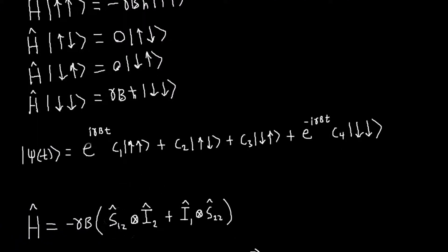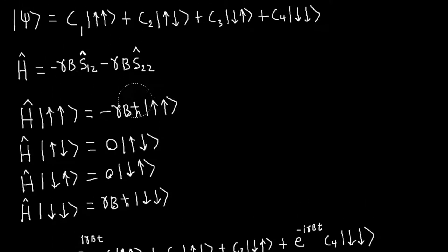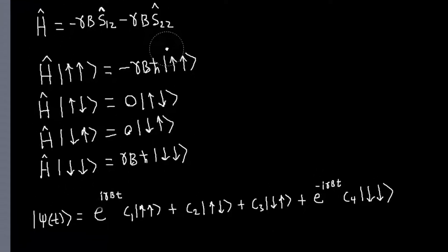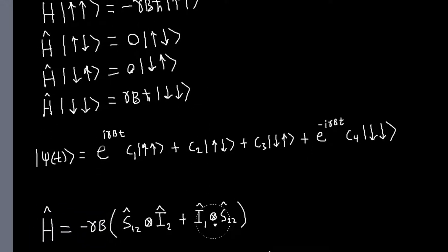So, when I write this, I mean that it's Kronecker product with an identity. And then, similarly, if I just write S2Z, I'm assuming that I have this Kronecker product with the identity operator.